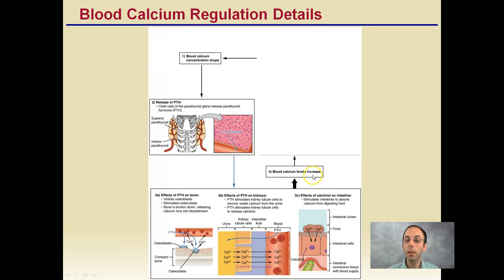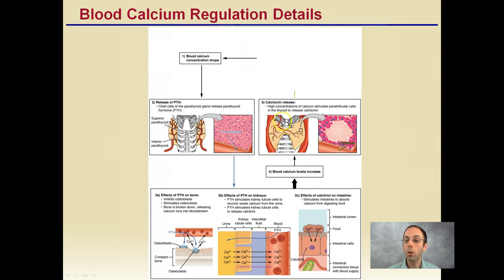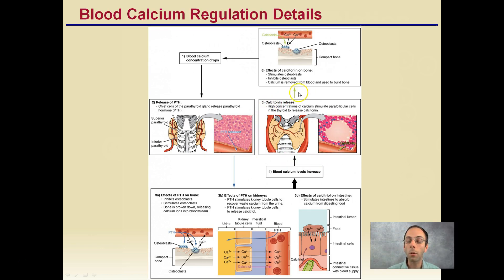Now calcium levels will begin to increase. This may cause calcitonin to be released, as high concentrations of calcium stimulate these cells to release calcitonin. Calcitonin will put calcium into bones. We had low levels, performed these three events, and have now increased blood calcium almost too high. Calcitonin then acts on bone — stimulating the osteoblasts, inhibiting the osteoclasts — so calcium is removed from the blood and used to build bone. This can cause calcium levels to drop, which will trigger the sequence of events to begin again.